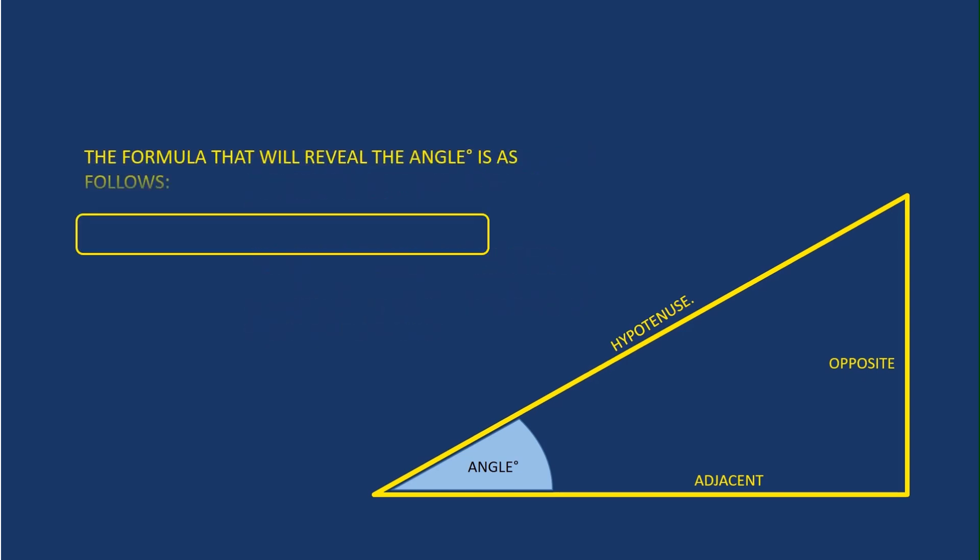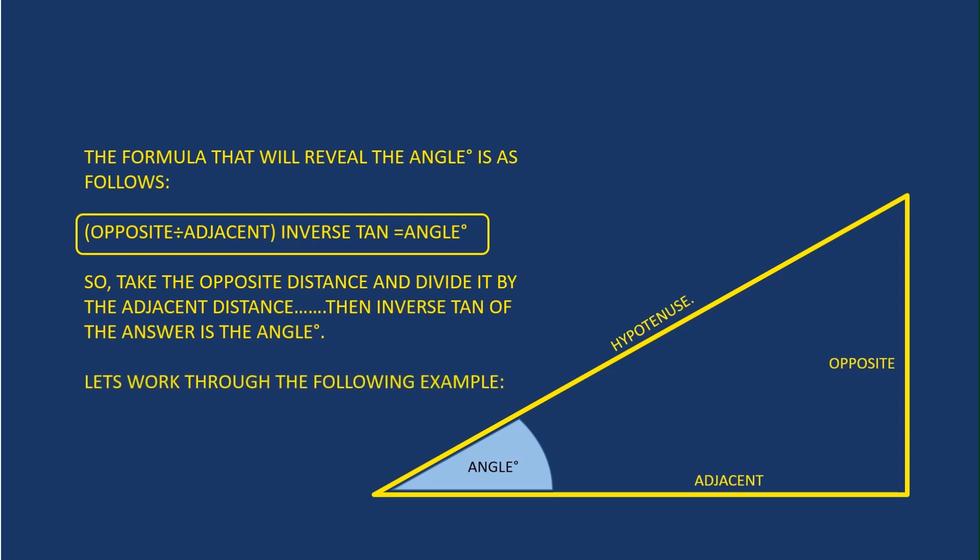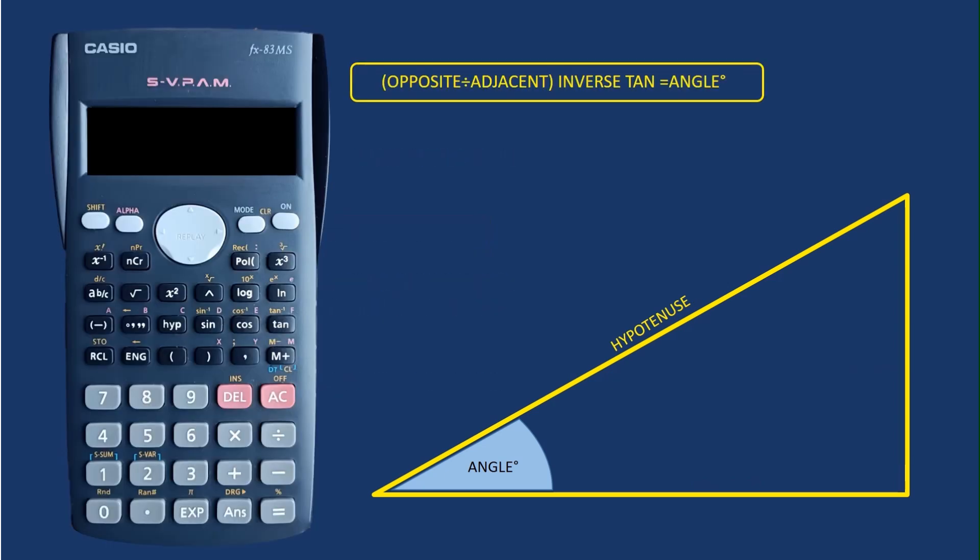Here's the formula: opposite divided by adjacent. You complete that first in the brackets, and whatever your answer is, you inverse tan that and hit equals. We're going to work through an example now to show you how that works.